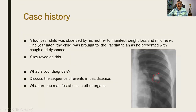Welcome to this class. A case history: a four-year-old child was observed by his mother to manifest weight loss and mild fever. One year later, the child was brought to the pediatrician as he presented with cough and dyspnea in addition to the above symptoms, and the X-ray revealed this. What is your diagnosis? Discuss the sequence and events of this disease.